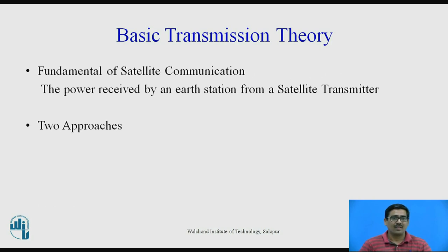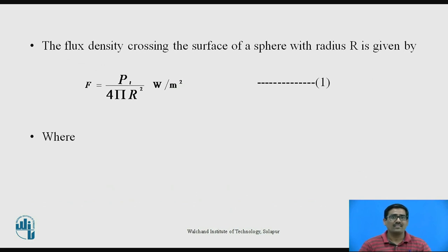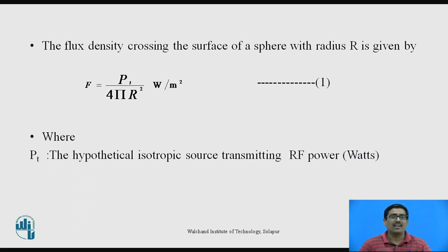Basic Transmission Theory. The fundamental of satellite communication is defined as the power received by an Earth station from a satellite transmitter. There are two approaches for this basic transmission theory: the first one is flux density and the second one is the link equation. The diagram shows flux density produced by an isotropic source, which transmits data in all directions — that is Pt watts — bombarded on an area A m², which gives flux density F in watts per m². The flux density crossing the surface of a sphere with radius r is given by F = Pt / (4πr²), where Pt is the hypothetical isotropic source transmitting radio frequency power in watts and r is the distance in meters.